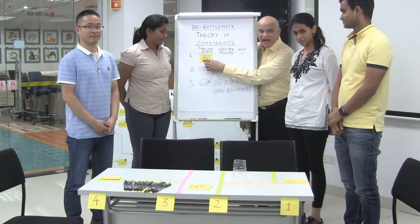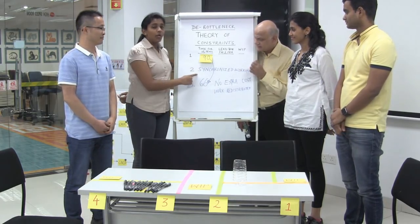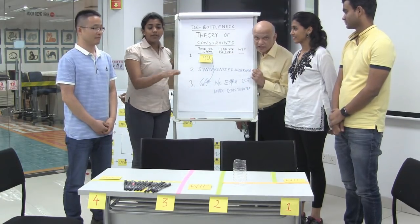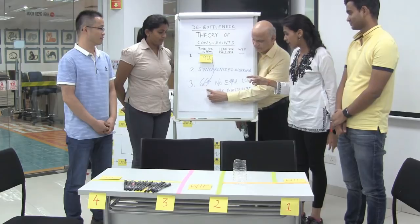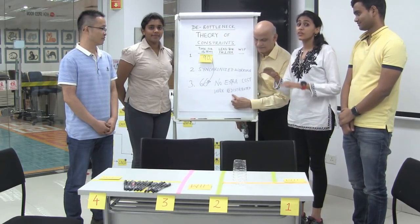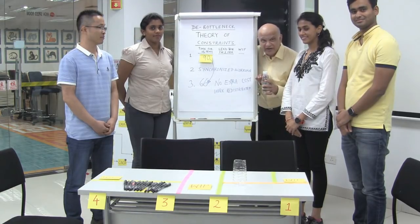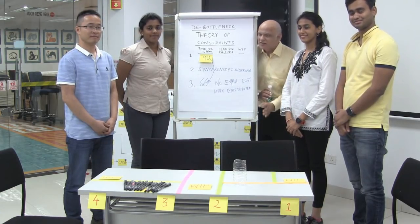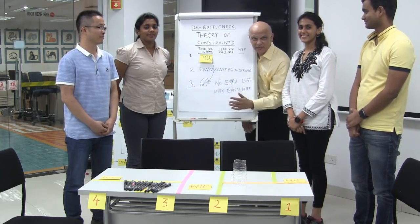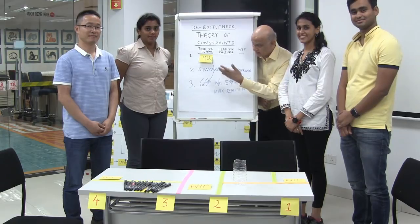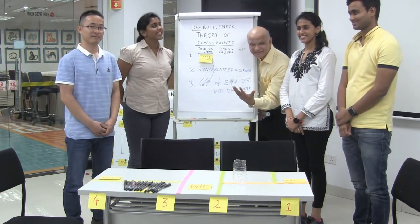In the first step we only identified the bottleneck. In the second step we saw synchronized working where there was no WIP in between but output remained the same. In the third step, no extra cost was added — work was redistributed and the result was an increase in output. So we really de-bottlenecked without an increase in cost. There is of course a fourth step — added resources. This is the systematic way to de-bottleneck, and as this experiment showed, you can get even a 50% increase in output. Congratulations. Thank you so much.